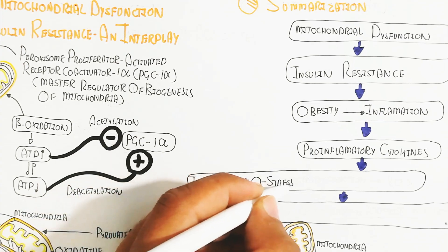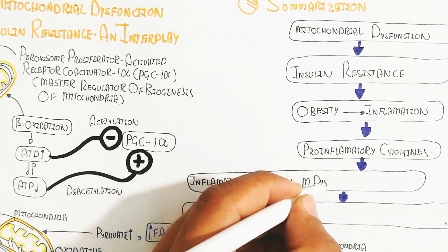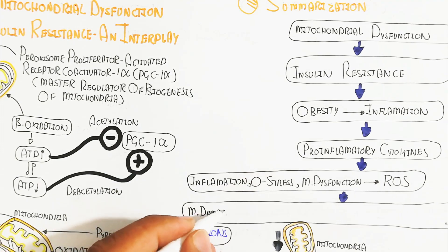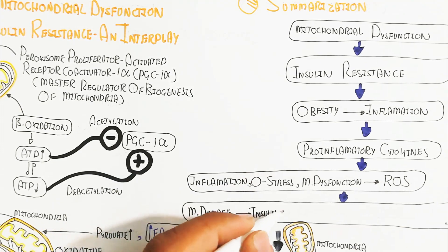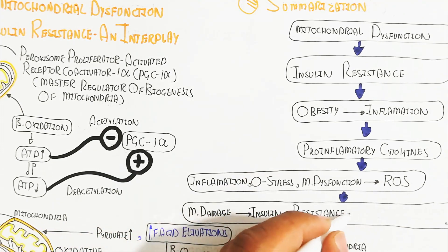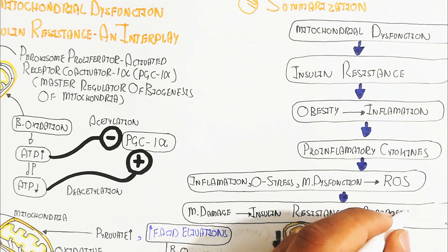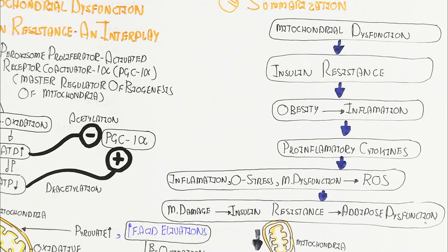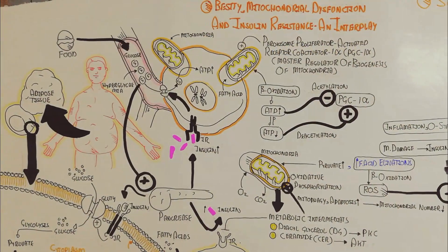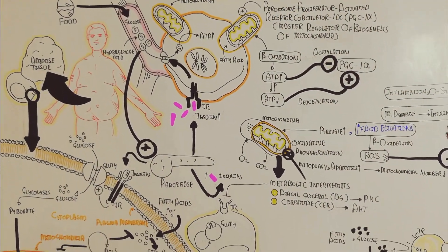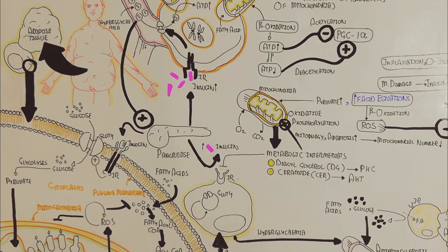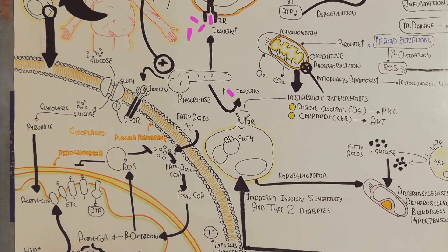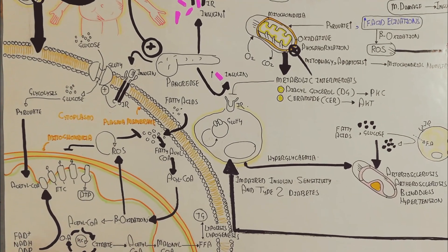In summary: mitochondrial dysfunction leads to insulin resistance and obesity, which leads to low-grade inflammation. Pro-inflammatory cytokines recruit macrophages, worsening inflammation. Oxidative stress and mitochondrial dysfunction produce more reactive oxygen species, and mitochondrial damage leads to insulin resistance and adipose tissue dysfunction. Thanks for watching — please subscribe, like, and share.